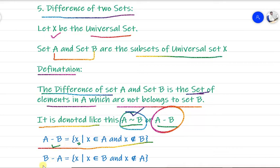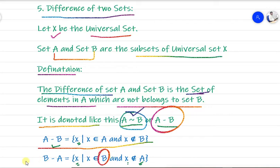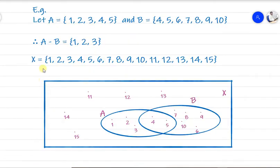If you take B minus A, the definition changes accordingly. B minus A is the set of all X where X belongs to B, except the elements which are also in A. So we take all elements from B, remove the common elements shared with A, and whatever remains is B minus A.